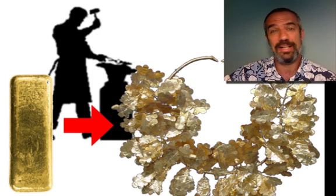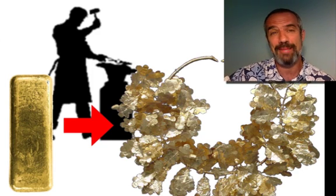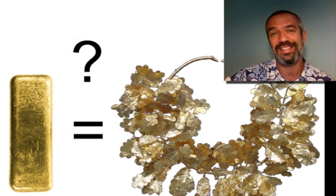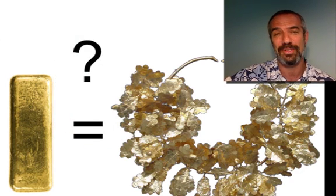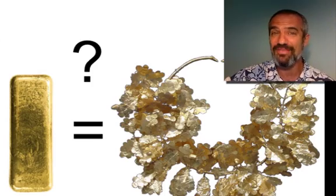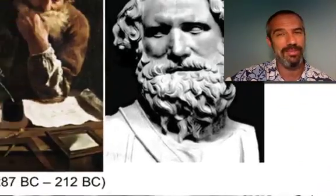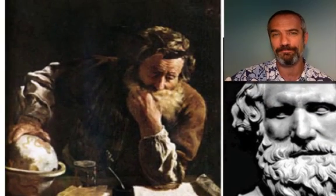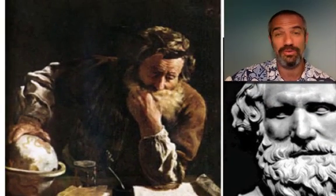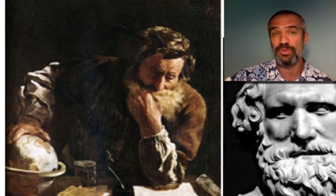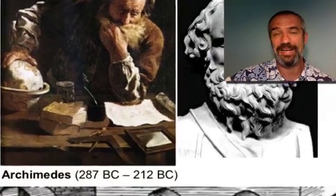He didn't know how to figure out whether this had happened. The question was: was the crown made of exactly the same gold he had given? He posed that as a problem to Archimedes, and Archimedes apparently struggled with it — how could he figure out, without destroying the crown, whether it was made of the pure gold he had been given?